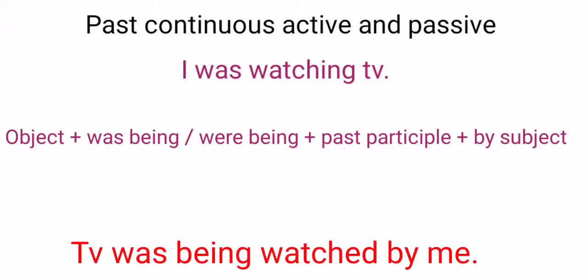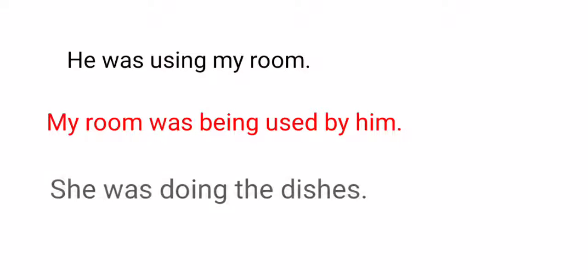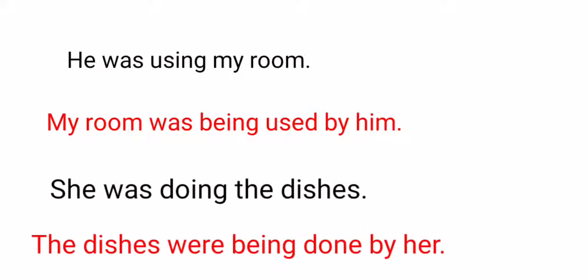Here's the passive voice of this sentence: 'TV was being watched by me.' First we use object plus 'was being' plus past participle — that's the third form — plus 'by' subject. Let's do more examples for your practice. 'He was using my room' — active voice. 'My room was being used by him' — this is passive voice.